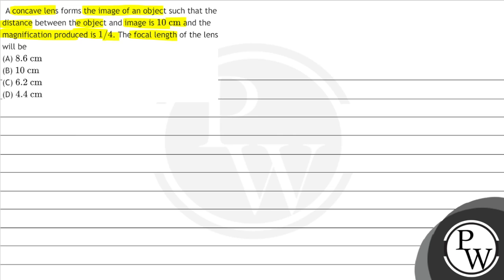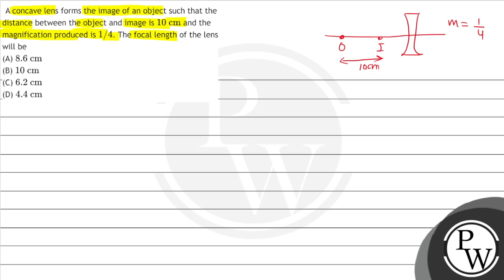In this question, we have a concave lens. This is our concave lens, this is our object, and this is where the image is made. The distance between object and image is 10 cm, and the magnification is 1/4. So we have to find the focal length of our lens.